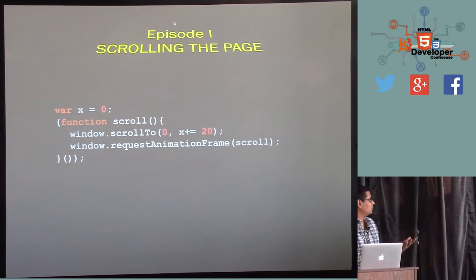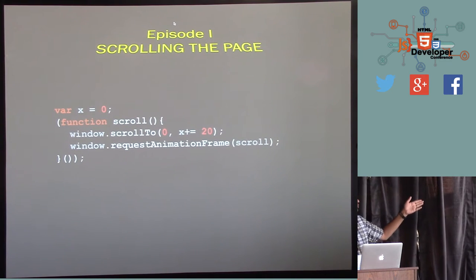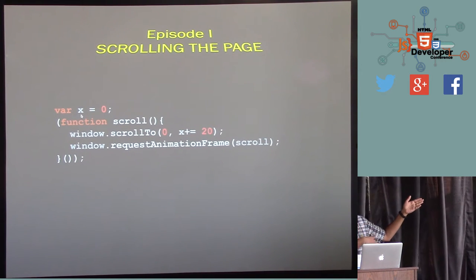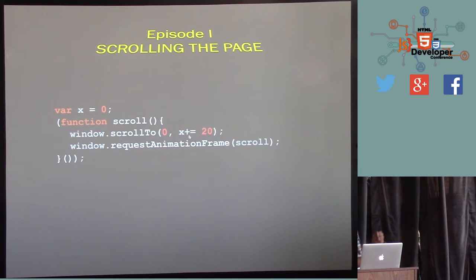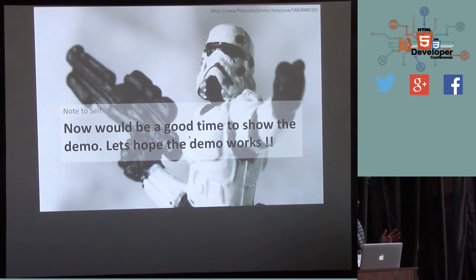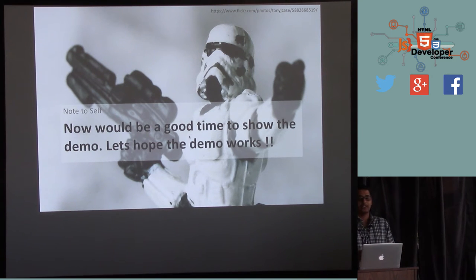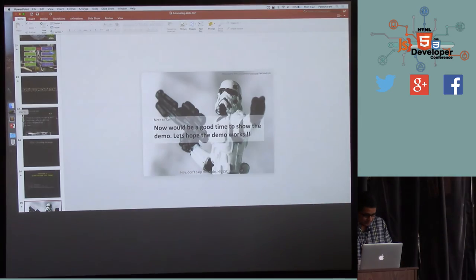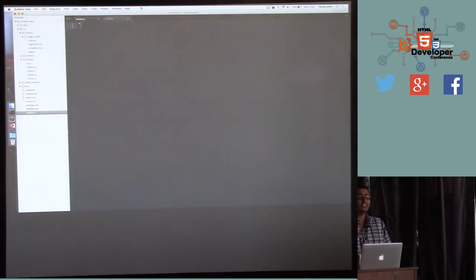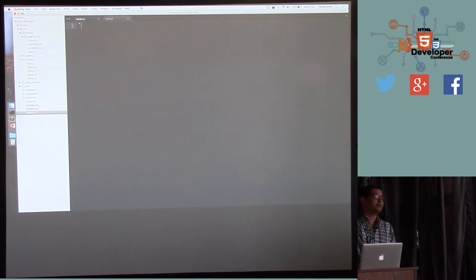This is a quick hacky function I wrote for scrolling pages. There's a window.scrollTo function that takes how much to scroll on x and y axes. I have a variable called x — appropriately named because I'm scrolling the y-axis, just to confuse people — and on every requestAnimationFrame I'm increasing it by 20. That's a quick way to scroll the page. I'm going to move out of the presentation and start live coding now — please watch out for syntax errors and alert me if I make a mistake.